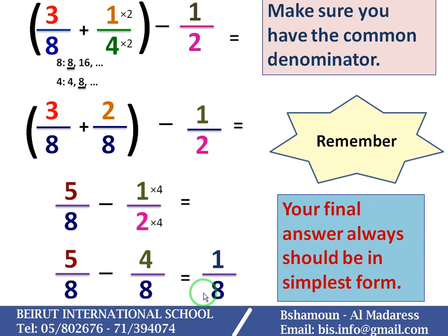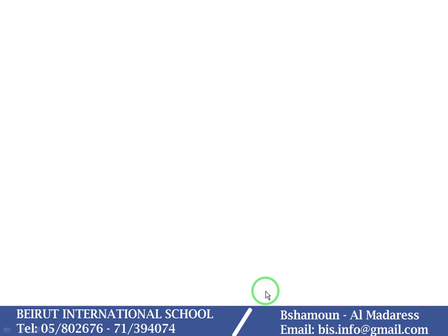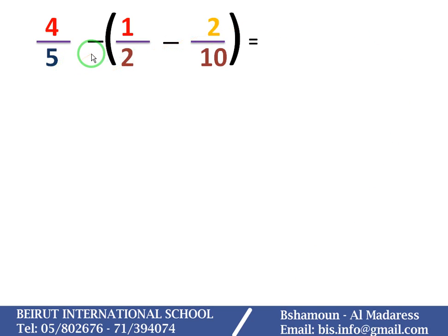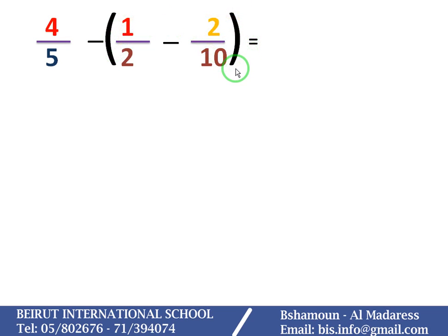I have now the same denominator, so I subtract: 5 minus 4 is equal to 1 over 8. Remember, your final answer always should be in simplest form, and here my answer is in simplest form. Now let's consider this example. I have here 4 over 5 minus 1 over 2 minus 2 over 10, which are inside the parentheses.